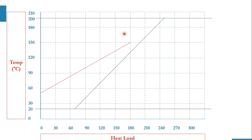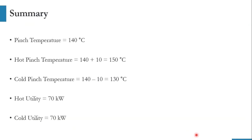Back-calculation confirms: 130 + 10 = 140°C pinch temperature, and 150 minus 10 = 140°C pinch temperature. The pinch points and utility requirements are the same in both the graphical method and the problem table approach. Both procedures are now available, and it is your choice which to use in future calculations, though both methods will be used in this course.